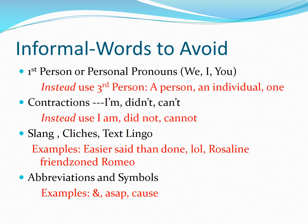There are several informal words and features to avoid in formal writing. First, avoid first-person or personal pronouns like 'we', 'I', and 'you'. Instead, use third-person references like 'a person' or 'an individual'. You should also avoid contractions such as 'didn't' and 'can't' — write 'did not' and 'cannot' instead. Slang, plain text lingo, and phrases like 'easier said than done', 'lol', or 'friend zone' should also be avoided.